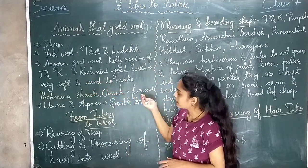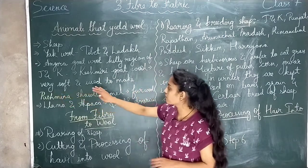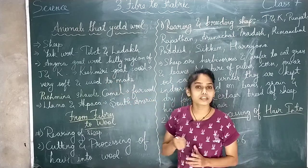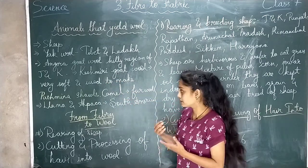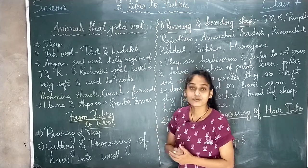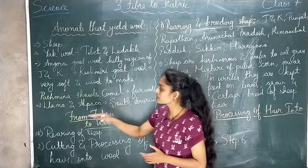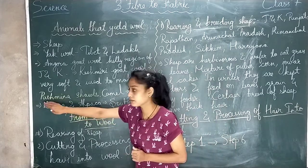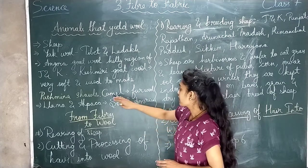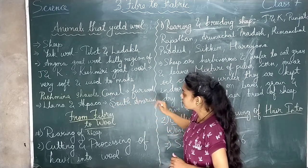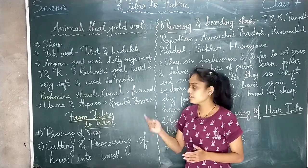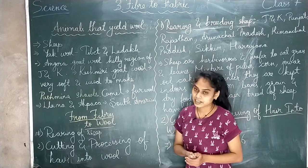Kashmiri goat wools are very soft and used to make pashmina shawls. These Kashmiri goats are found abundantly in Kashmir, and their fur — their wool — is very soft. From that we make pashmina shawls. Camel fur is also used to make woolen fabric.